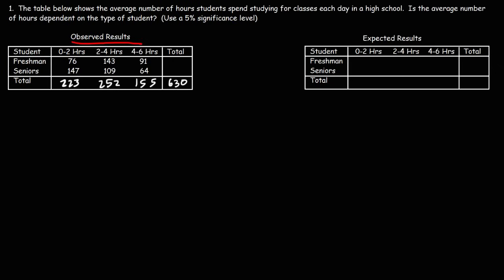Now let's find the totals of the other two rows. 76 plus 143 plus 91 is going to be 310. 147 plus 109 plus 64 gives us 320. 310 plus 320 is 630.